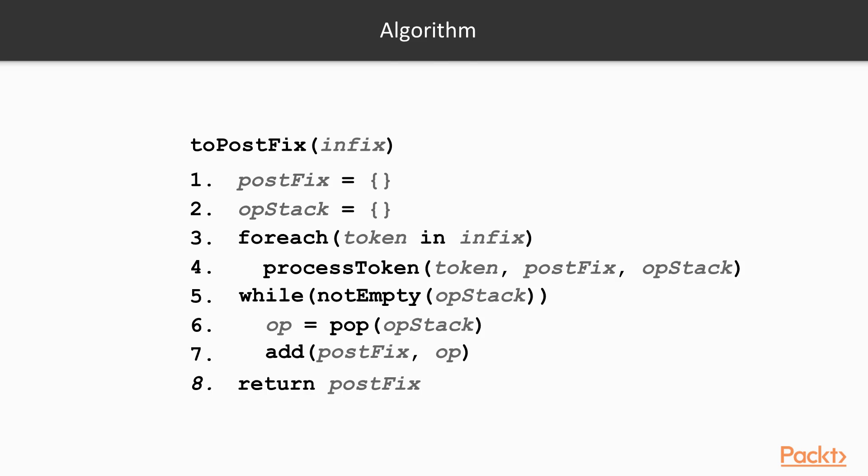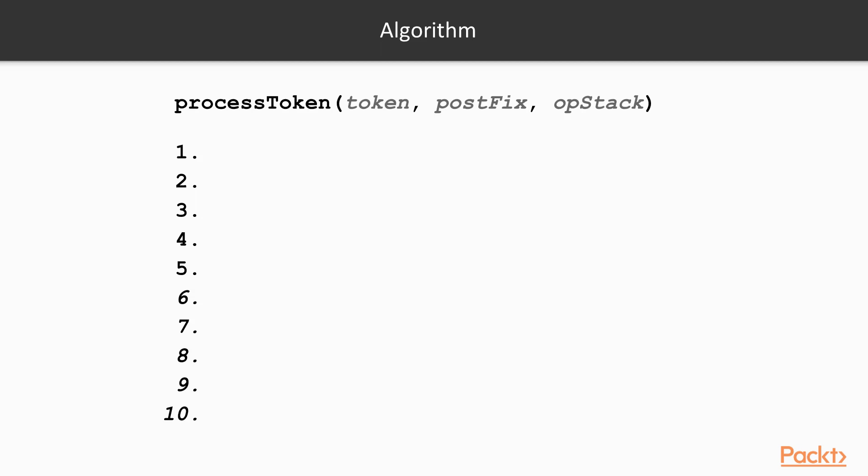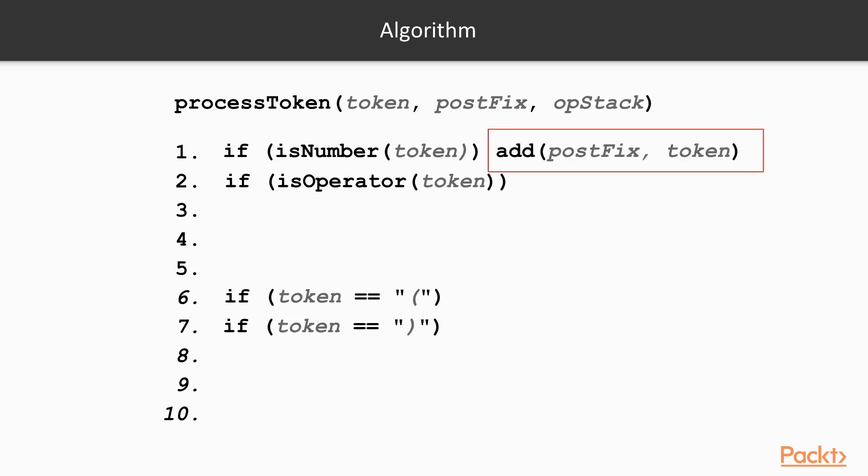We now need to implement the processToken function. Our input token can meet one of four possible conditions. It can be a number, an operator, a left bracket, or a right bracket. Let's fill in the actions in each case, starting with the easiest one first. If the token is a number, we simply add the number to the postfix list.